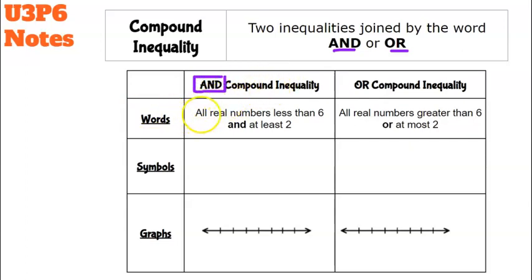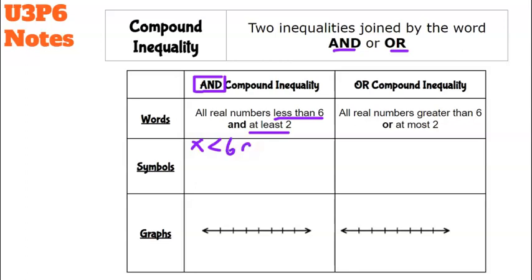In words, an AND inequality could look like: all real numbers that are less than 6 and at least 2. In symbols, we write x < 6, then the word 'and' in the middle, and then x ≥ 2. Remember, 'at least' means greater than or equal to.